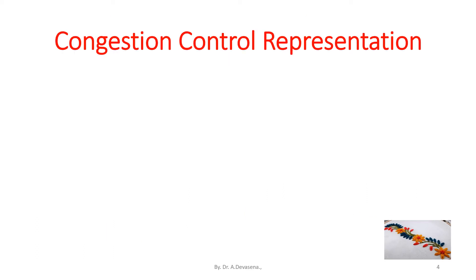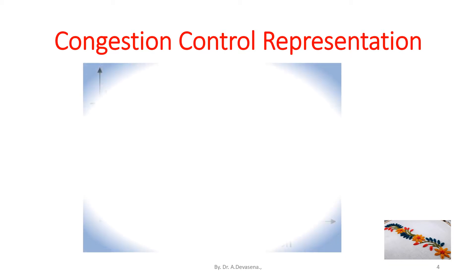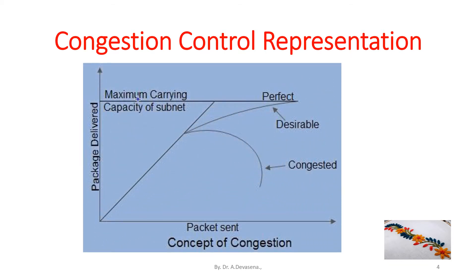Congestion control representation is shown below. This is the representation for the concept of congestion. The packets sent from the sender have to reach the destination properly. If a minimum number of packets reach the destination, it means that because of congestion, most of the packets have been discarded. This is indicated in this diagram.